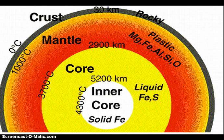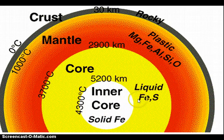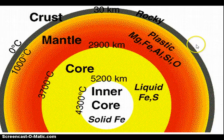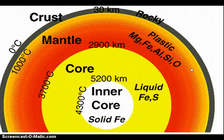We know this happens because we're standing on the evidence. Here is the Earth: the iron is in the center, and you have nickel in there, and you have sulfur, magnesium, a little bit of iron, aluminum, silicon, and oxygen. And on outwards you have the atmosphere, which has nitrogen, helium, and hydrogen.